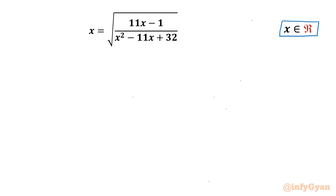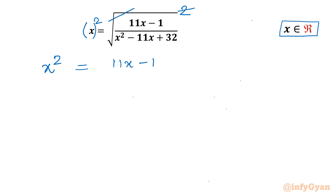Let's get started by squaring both sides. The square root and square will cancel out, and the left hand side will have a square. So we get x squared equals (11x minus 1) divided by (x squared minus 11x plus 32).